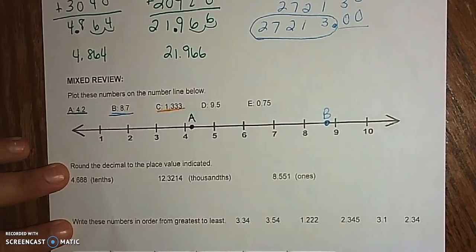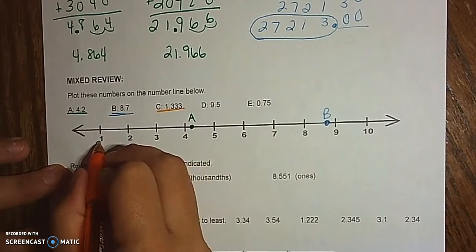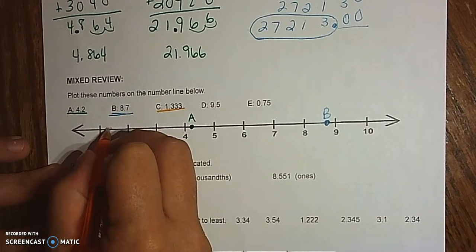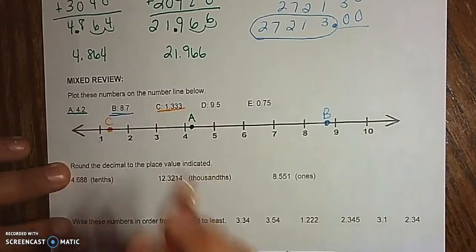C is 1.33, so it's more than 1, less than 2, so it goes in here. 0.3 is still less than half, but it's close. So there's my C.